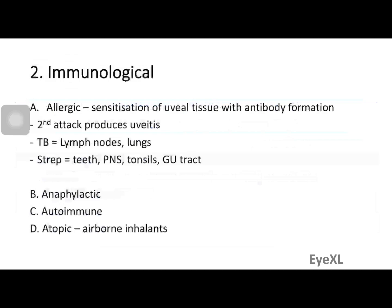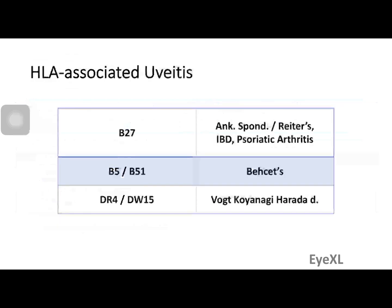This is commonly seen in tuberculosis — where the organism source is from the lymph nodes or lungs — and with Streptococcus organisms from the teeth, paranasal sinuses, tonsils, or genitourinary tract. Less common immunological variants include anaphylactic (Type 1 hypersensitivity), autoimmune, and atopic reactions. HLA-associated uveitis is also very common — the patient tests positive for one or more HLA types residing on chromosome 6 of human DNA.